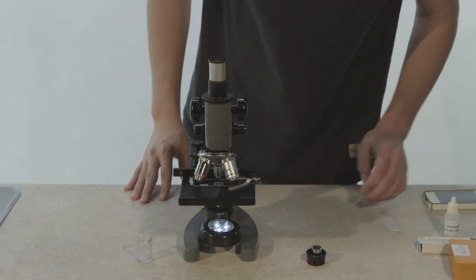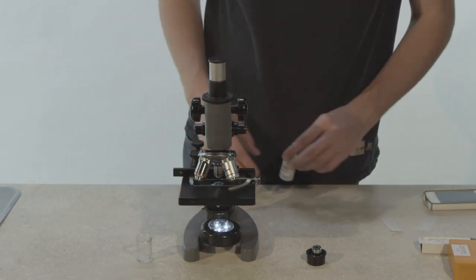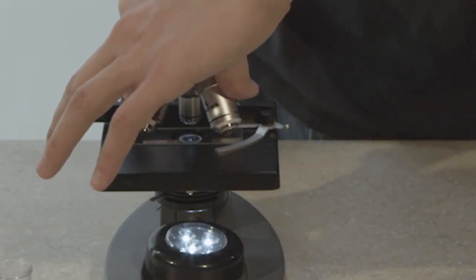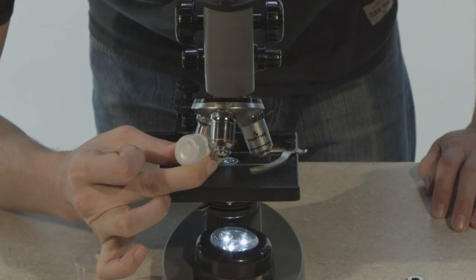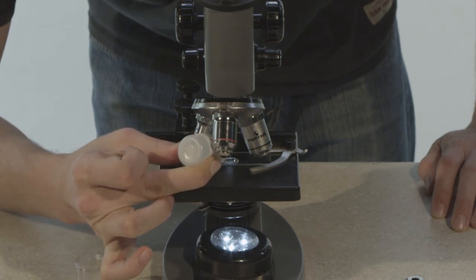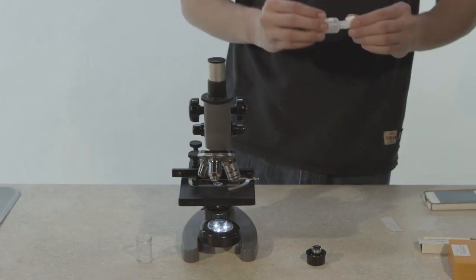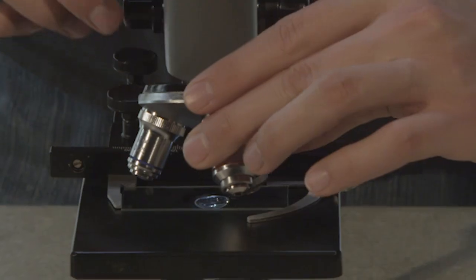Coarse adjustment should never be done when an oil immersion lens is being used. It can crack the slide or damage the lens. When you are ready to add oil, rotate halfway between the oil immersion lens and other objective lens. Carefully add one or two drops to the section of the slide you are viewing. Put the oil in a secure place for later use.